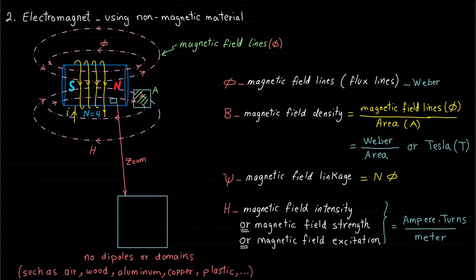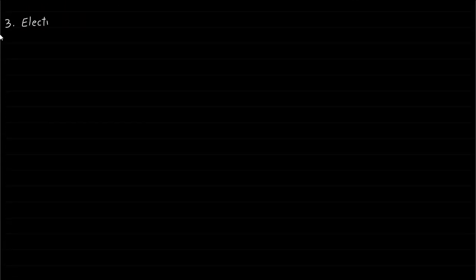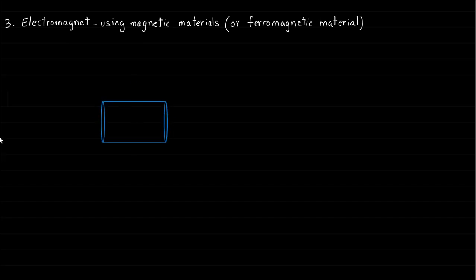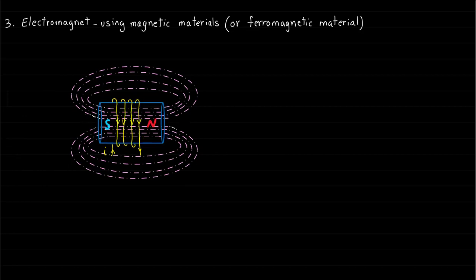The exciting current magnitude and the coil number of turns are the only factors that contribute to this electromagnet. The third method of producing the magnetic field is by using an electromagnet with a magnetic material, or ferromagnetic material, such as iron, steel, and ferrite. These lines represent the magnetic field lines produced by this electromagnet.